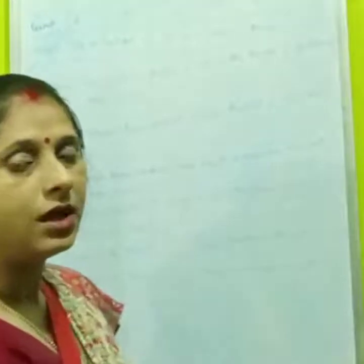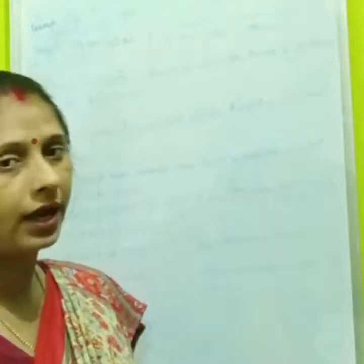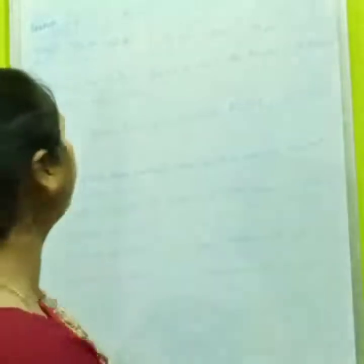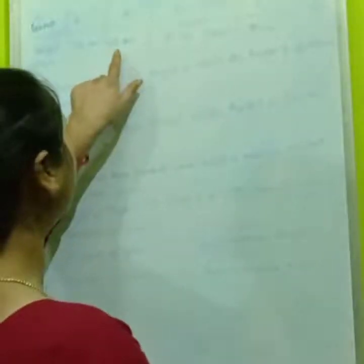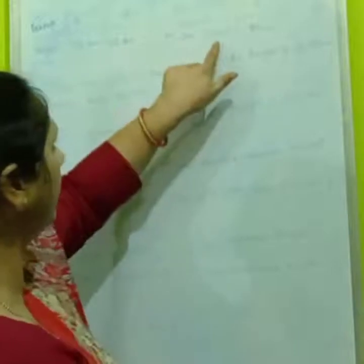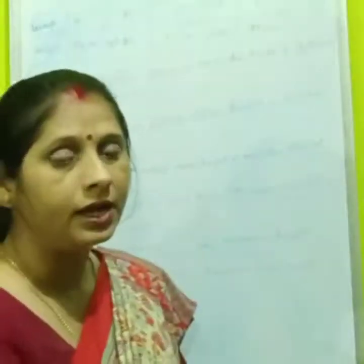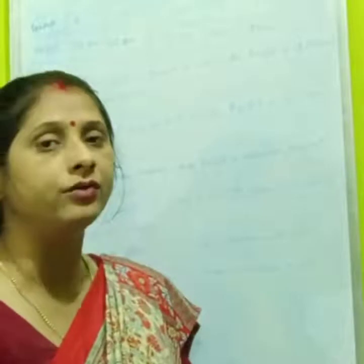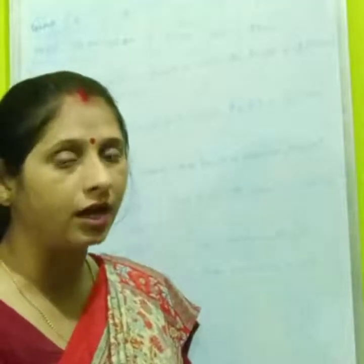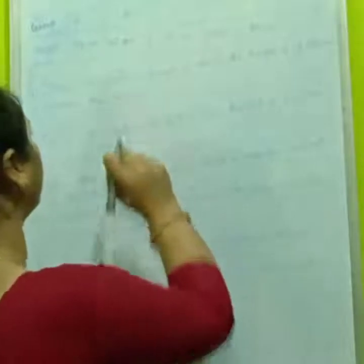How many groups have students whose height is more than 100 centimeter? More than 100 centimeter is 107 and 110. So two groups, B and D, are there where the height of students is more than 100 centimeter. So we will fill 2 here.